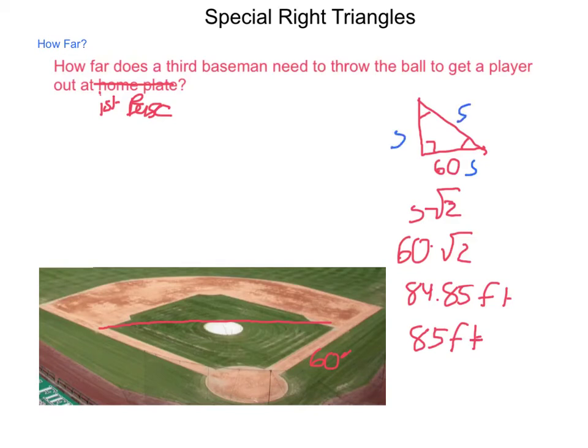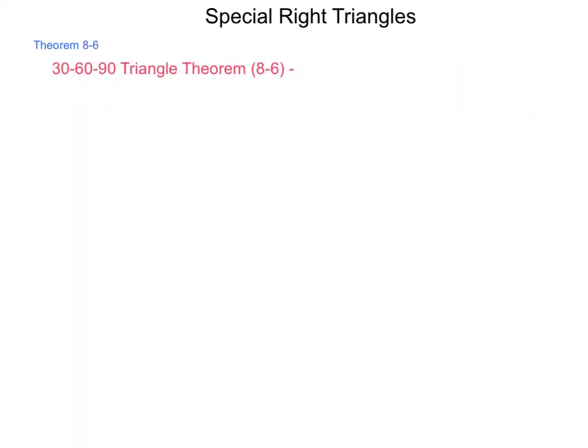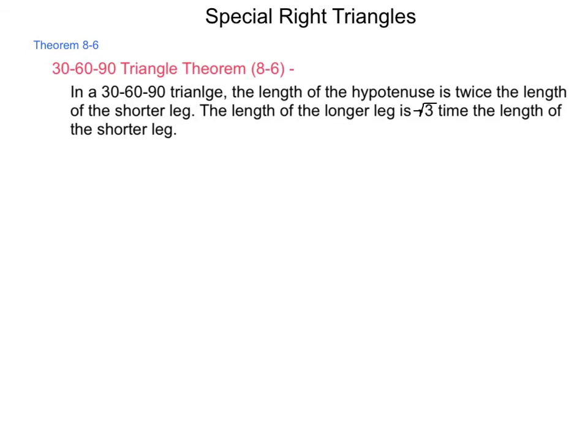The 45-45-90 is only one of two special triangles we look at with the Pythagorean theorem. Theorem 8-6 relates to the 30-60-90 triangle. It states that in a 30-60-90 triangle, the hypotenuse is twice the length of the shorter leg, and the longer leg is √3 times the length of the shorter leg.